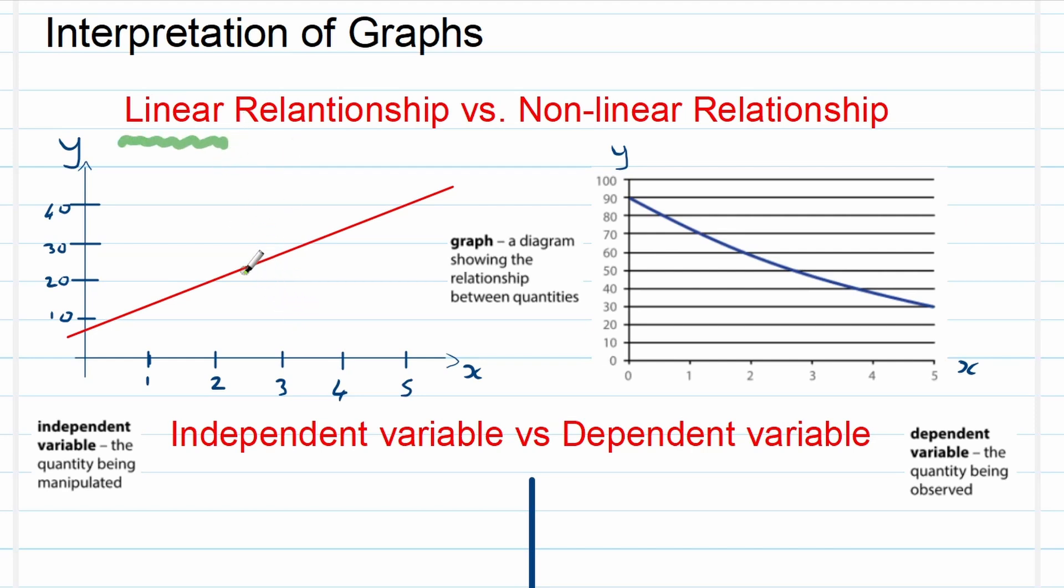The first quantity we refer to is the independent variable, that is the one that you choose. Let's say you choose a value of x, in this case. What will be the corresponding y value? Now, if the relationship between the x and the y is a straight line, then we call it a linear relationship.